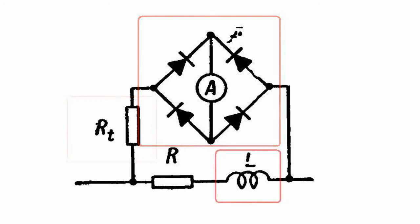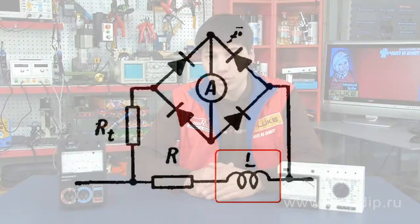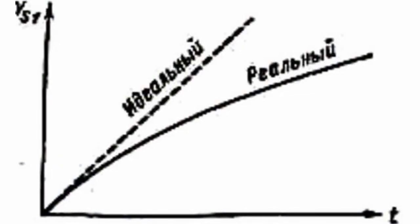To decrease the dependence of the device's readings on frequency, inductance L is used. The thin rectifying layer has a considerable capacity that shunts its own resistance. This is why as frequency grows, a relatively small portion of the current will be rectified and the device's readings will decrease. The presence of inductance increases, with growing frequency, the voltage of the device, compensating for the negative effect of the capacity.